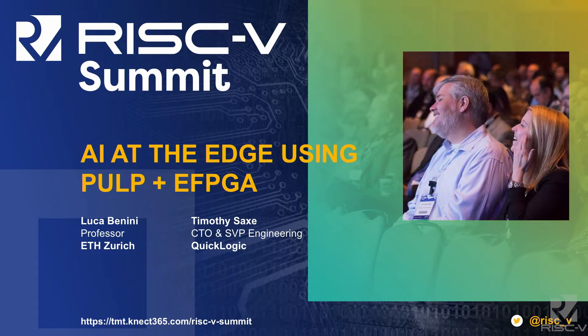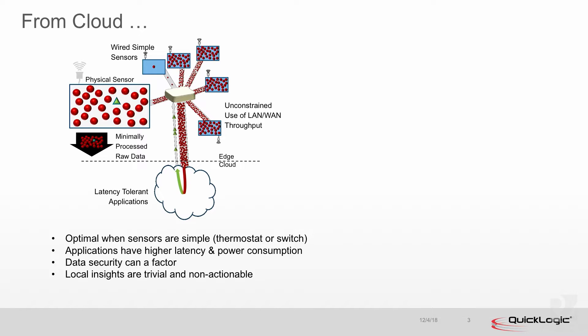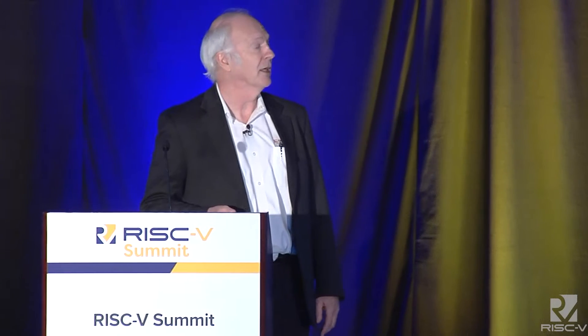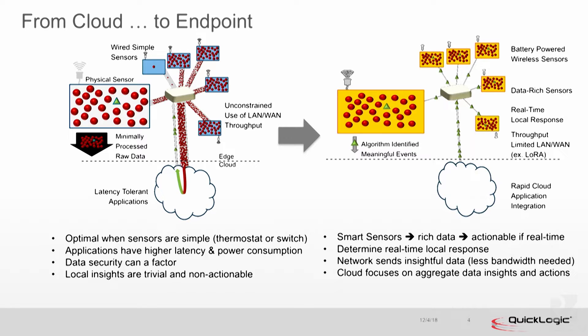I'm going to talk about AI at the edge, using FPGA or EFPGA to help with that. One of the big paradigms today is using AI for various reasons. If you look at a typical case of a dumb sensor, the red dots represent data you might be taking. My wristwatch here is checking accelerometers, taking lots of pieces of data, and every time I take a step you get a meaningful event — a little piece of green. Most people today ship all of this data back to the cloud, spending a lot of energy and bandwidth moving it around.